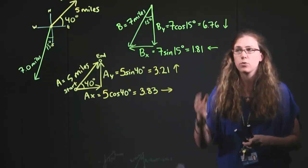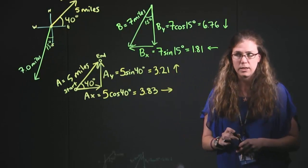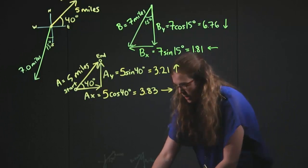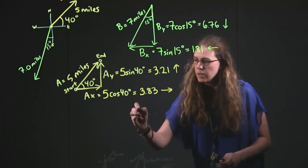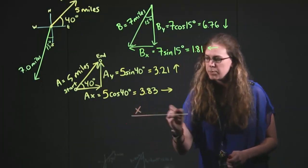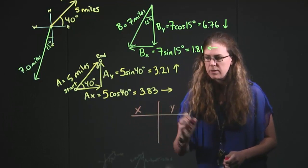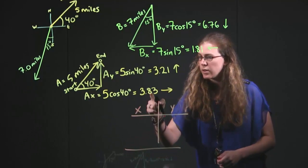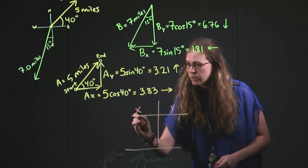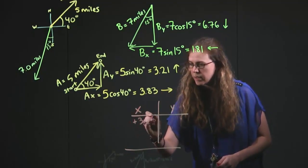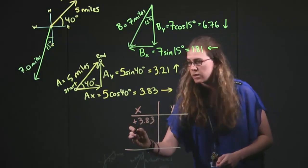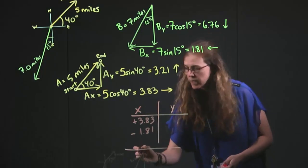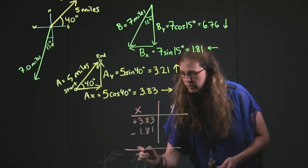Now, there's different ways that you can deal with the pieces once you have them like this. One of the ways that a lot of students like to use is by making a table. So, you get the x pieces and the y pieces, and you put them in a table in order to get the totals. So, if we look at the x to the right means positive 3.83, and to the left means negative 1.81, and so we end up with 2.02.